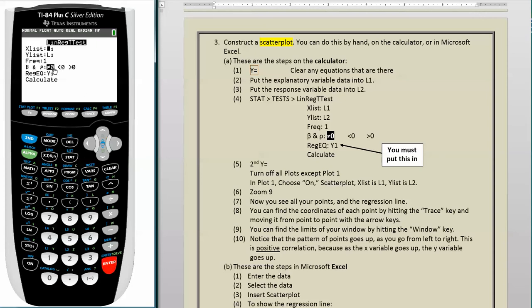So I'm going to choose that, and there you see what we want to have, L1, L2. Because X List, the explanatory variable is in L1, the Y List, the response variable is in L2, frequency is always 1. This thing here is always does not equal 0.